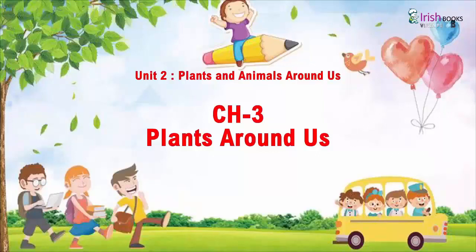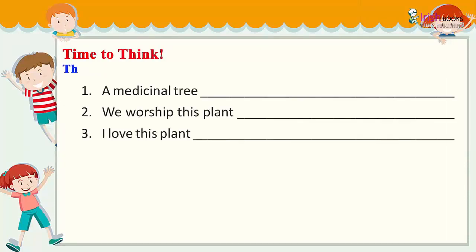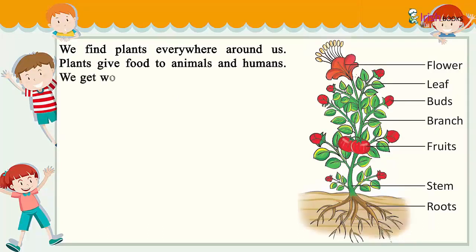Unit 2: Plants and Animals Around Us. Chapter 3: Plants Around Us. We find plants everywhere around us. Plants give food to animals and humans. We get wood, medicines, rubber, and many other things from plants.